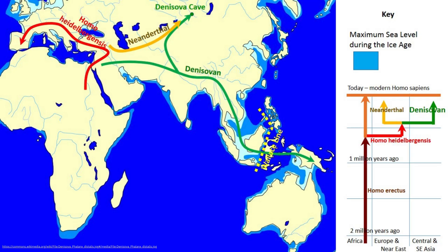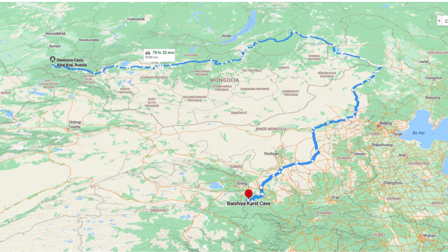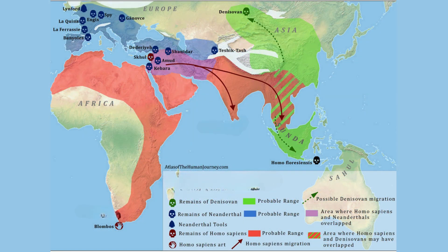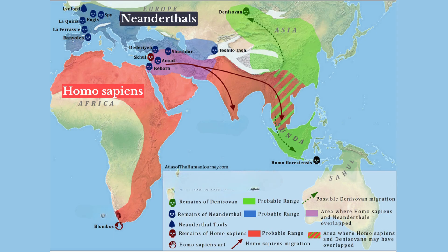Outside of Denisova Cave, a mandible found in Baishiya Cave in China was tentatively attributed to Denisovans based on proteomic evidence, and sediment DNA from the site also confirmed their presence. These limited fossil findings suggest that Denisovans may have been widespread across continental Asia, island Southeast Asia, and near Oceania. During the late middle to early upper Pleistocene, three distinct groups emerged: early modern humans in Africa, Neanderthals in Europe, and Denisovans in Asia.